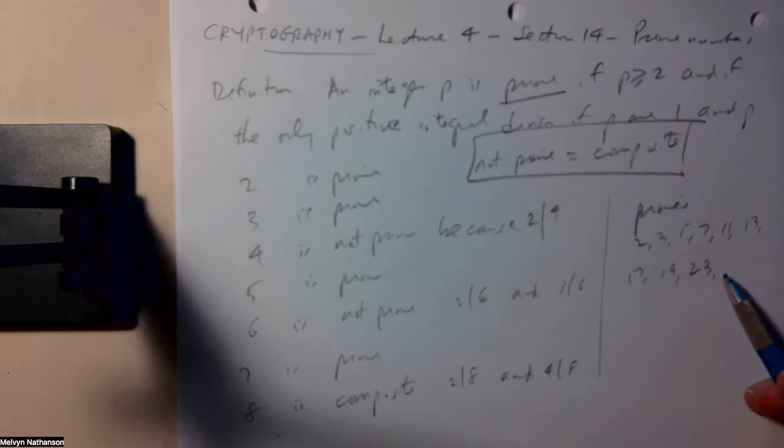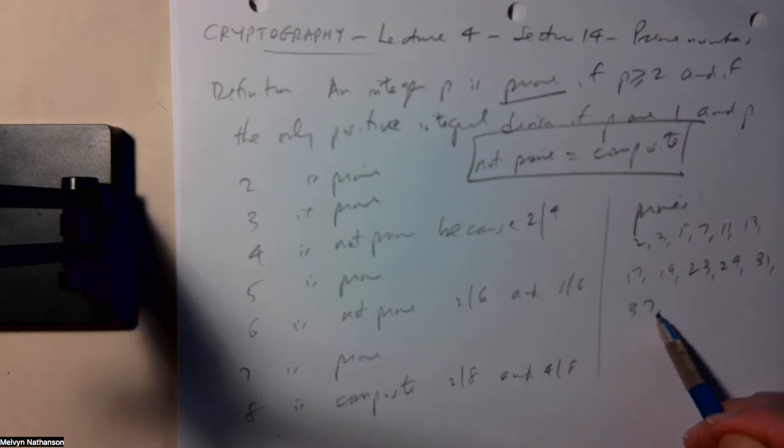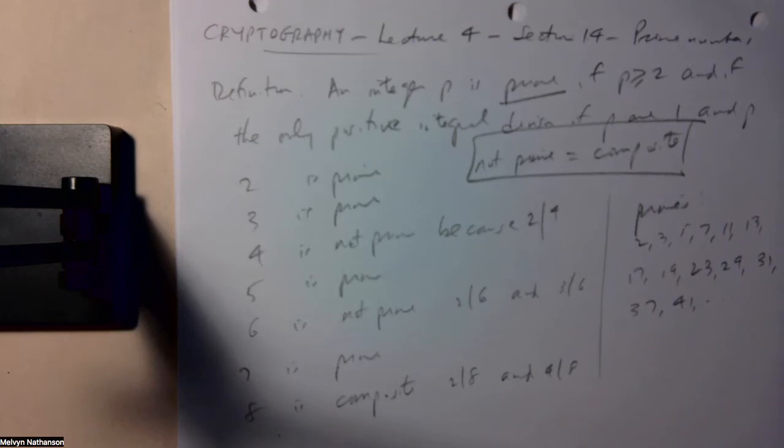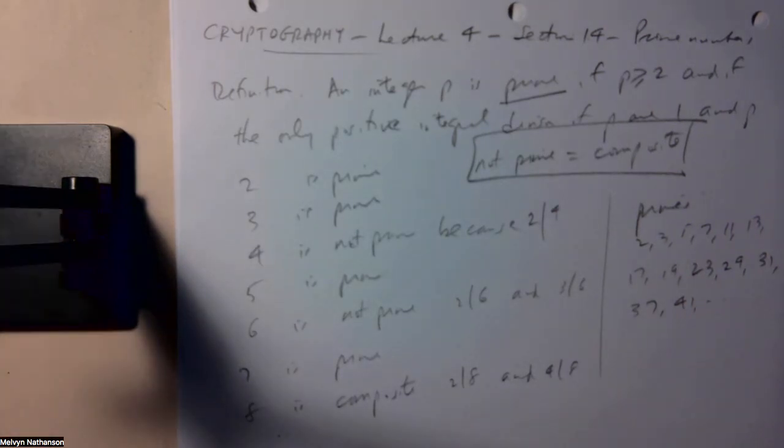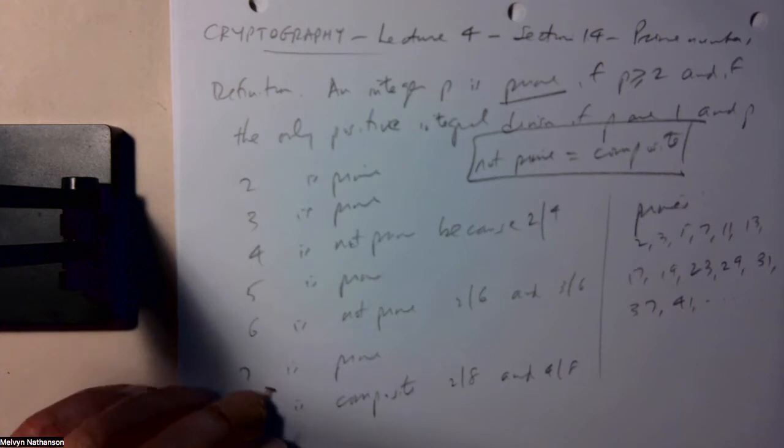After 23, the next prime is 29, 31, 37, 41. It's fun making a list of primes. They're very nice numbers. They're very important numbers. And they are practical in the sense that a huge amount of, in our case, cryptography is based on prime numbers.